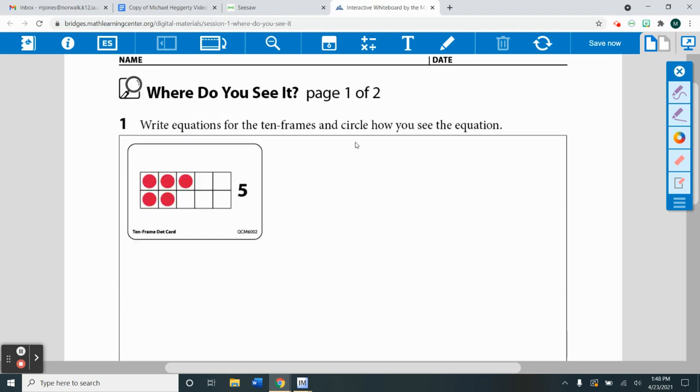I'm going to zoom in, and we're going to do number one together. The directions are to write equations for the 10 frames and circle how you see the equation. So we are going to find equations from the dots to get a total of five.